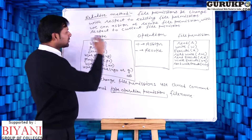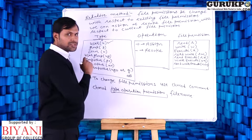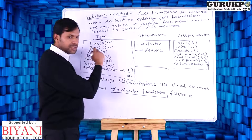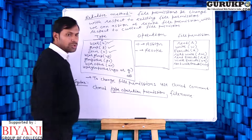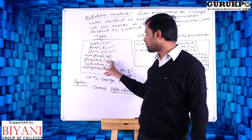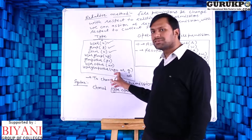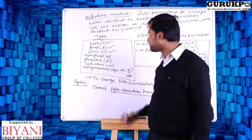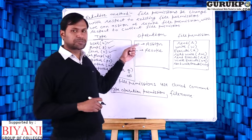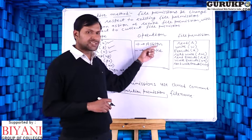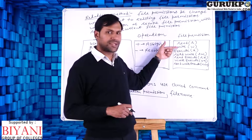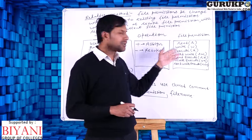There are three types of users: number one is owner, known as user, shown by u; number two is group, shown by g; third is other, shown by o. Or a combo — user+group+other means all, represented by a. Operations: plus means assign, minus means revoke. File permissions are three: read, write, execute, and combos of these.